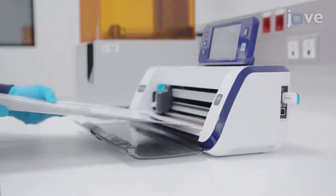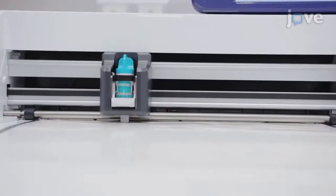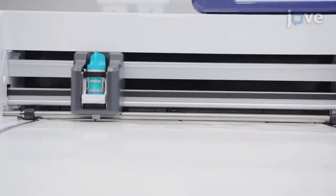When parameters are set, place the adhesive mat with the vinyl into the plotter and start the process of cutting the channel patterns on 95 µm thick vinyl.